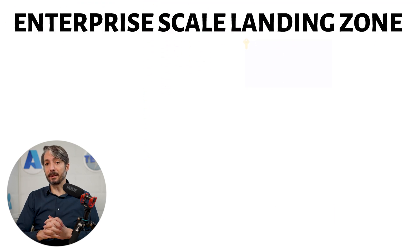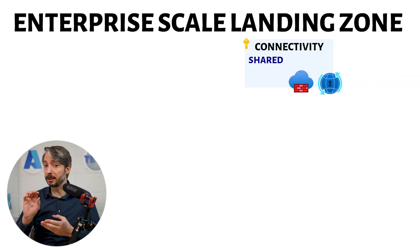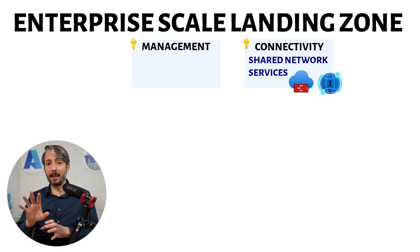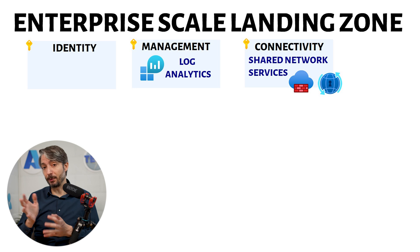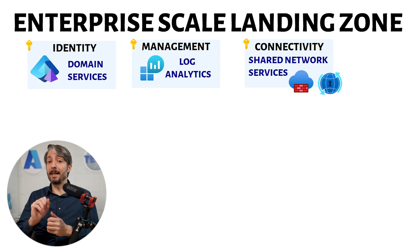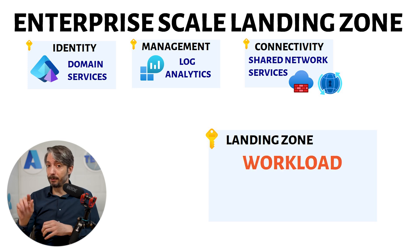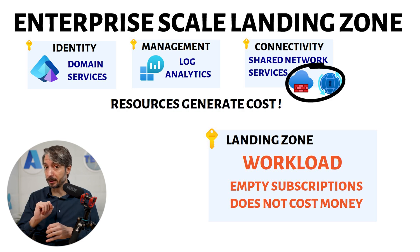These are the subscriptions we will create. We have the connectivity subscription — this is for in case we want a firewall, DNS resolver, or other network-focused shared services. Management subscription: here we centralize a log analytics workspace for the platform logs. We have an identity subscription, in case we want Entra ID domain services. And then we come to the landing zone subscriptions — this is where the actual application and workloads will land. As you can see, we have several subscriptions, but at this moment there's no cost and there's no resources in there.